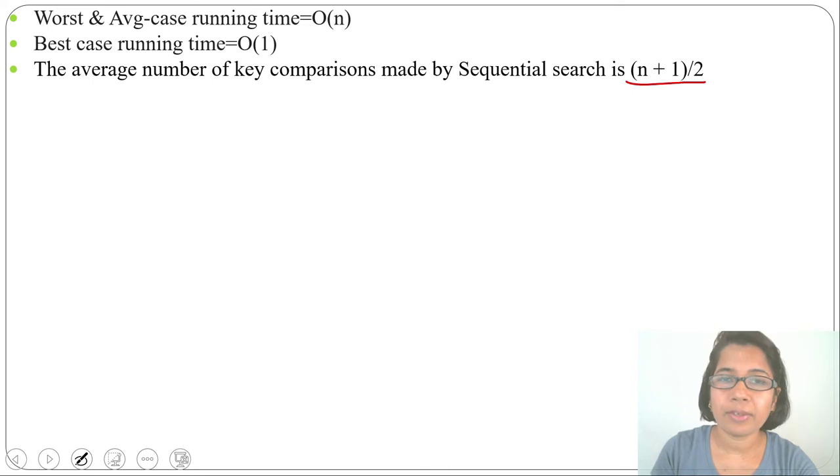This is all about sequential search. One array is given, one key is given. We need to search that key in the given array. We need to compare one by one element. We'll compare key with the first element. If matching found, that index will return. Else, i value will increase. Then, we'll compare with the second element, then with the third element. Like this. When matching found, we'll return that index.